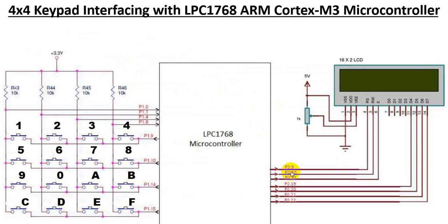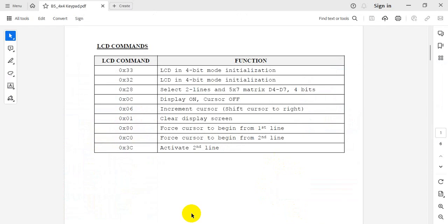You can easily write this by seeing the hardware interfacing diagram. If you see this diagram, P0.9, P0.10, P0.11, P0.19, P0.20, P0.21, and P0.22 — all these pins have been configured as output pins. Now before I proceed with the next part of the code, we need to have some knowledge of the LCD commands. There are many LCD commands which we use, but here I have discussed only those commands which we are using in the program.